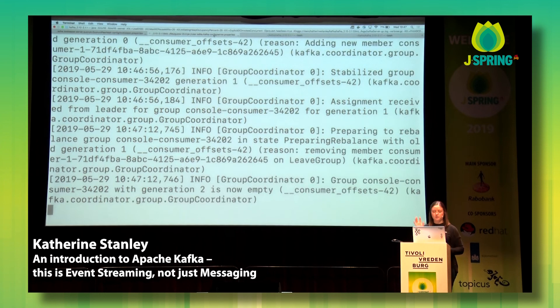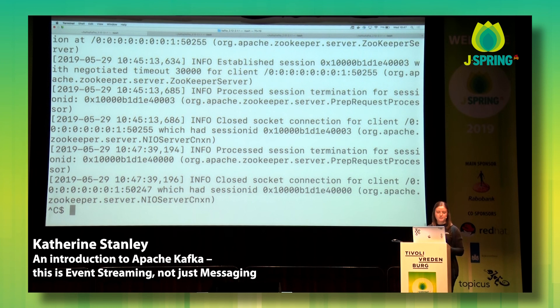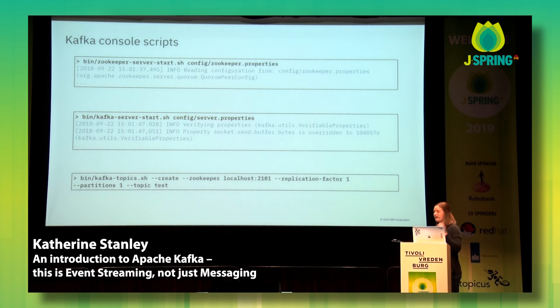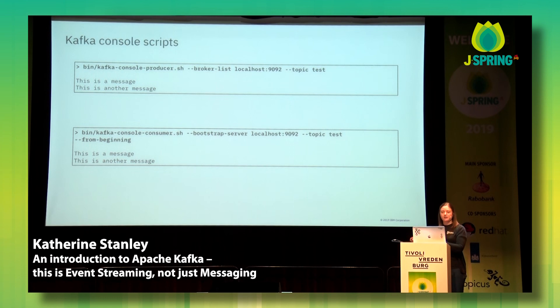One thing to be aware of when you first do this: when killing everything, stop your Kafka first — if you stop Zookeeper first, it gets a bit confused. Definitely stop Kafka and then stop Zookeeper. Getting started with Kafka is really quick and easy because when you download Kafka you get all those scripts and properties files — I haven't had to change a single thing. If you were connecting to somebody else's Kafka, you can still use the producer and consumer scripts, just providing additional properties for security or a different broker list.